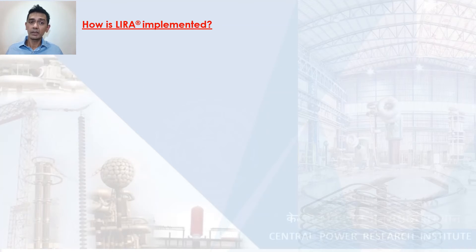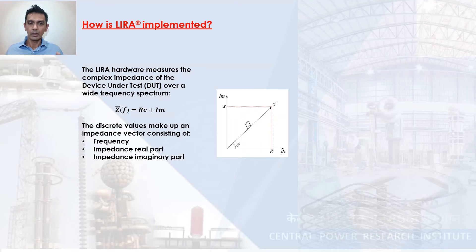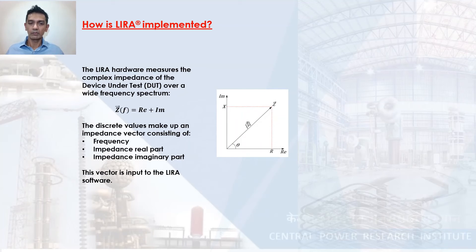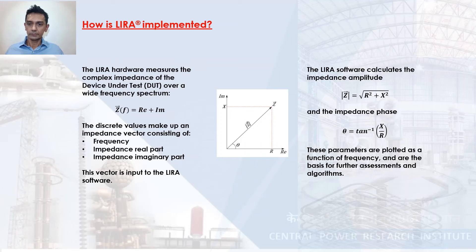To implement Lyra, the hardware captures the signal and measures the complex impedance of the cable over the entire frequency spectrum. When you plot that impedance vector, you have three components: frequency, the real component, and the imaginary component. This information is fed into the Lyra software, which calculates both the impedance amplitude and the impedance phase.